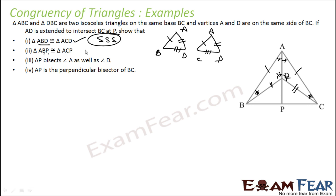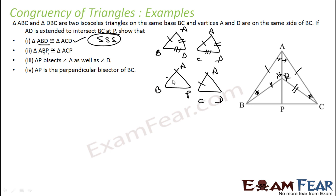Now we have to prove triangles ABP and ACP are congruent. Let's draw this. AB is equal to AC, which is given. AP is also a common side.